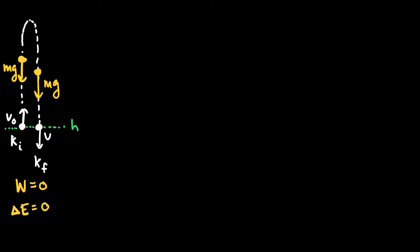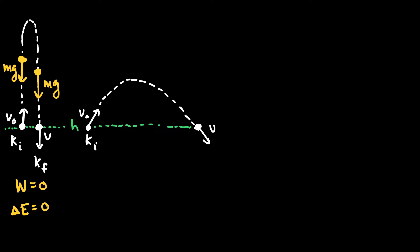Extending this now: suppose the ball is thrown at some angle with initial speed V-naught, giving it some initial kinetic energy. The ball goes up and comes back down, with the initial and final positions still occurring at the same height H. When it returns to height H, it has a final speed equal to its initial speed, since we're ignoring air resistance.